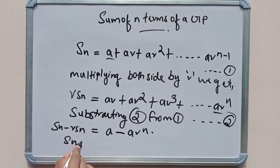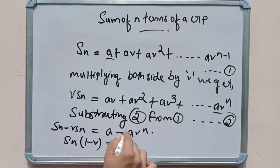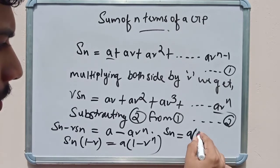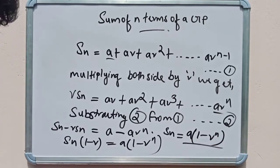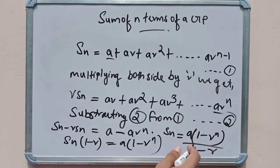So Sn(1 − r) = a(1 − r^n), which gives Sn = a(1 − r^n) / (1 − r). This is equivalent to a(r^n − 1) / (r − 1). This is the sum of n terms of a GP.